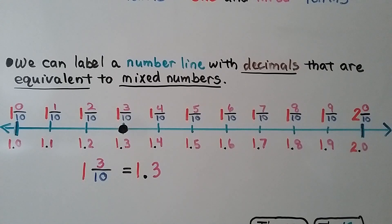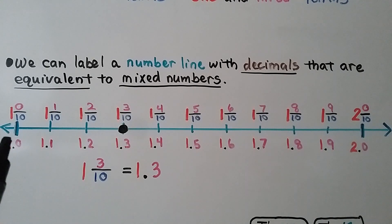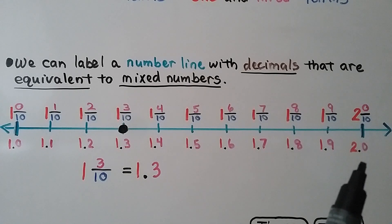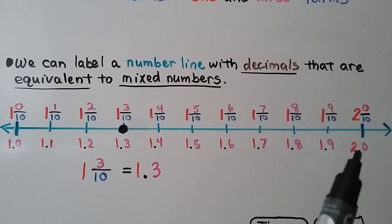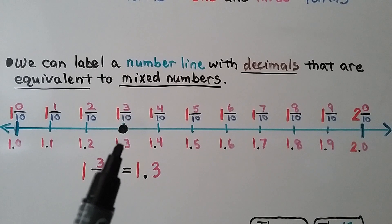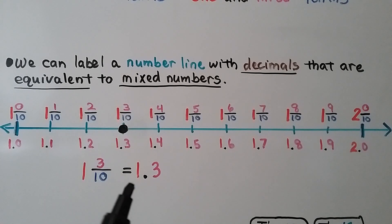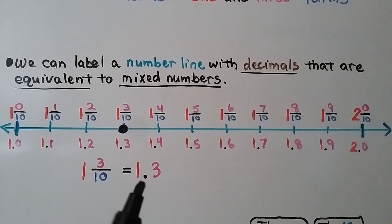We can label a number line with decimals that are equivalent to mixed numbers. This number line starts at one as one and zero-tenths and goes up to two as two and zero-tenths. One and three-tenths is written as a one in the ones place, the decimal point, and a three in the tenths place.